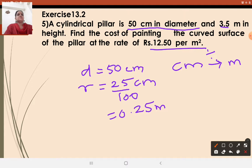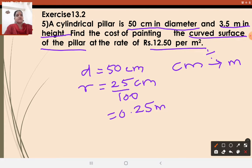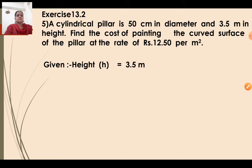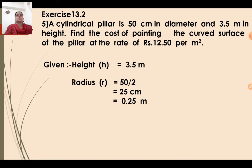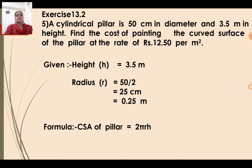The next given value is that 3.5 meter is the height, so H equals 3.5. What we want to find is the cost of painting the curved surface area. That means we want to find the CSA value and then find the total cost. So, given: height H equals 3.5 meter, radius R equals 50 by 2 equals 25 centimeter, converted to 0.25 meter. The formula for curved surface area of a pillar is 2πRH.